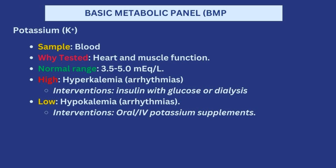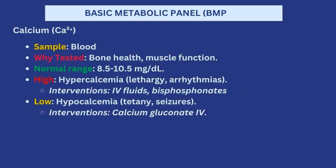Next, potassium helps to look at heart and muscle function. Normally it should be between 3.5 to 5. If it is high, that is hyperkalemia, and the patient could already be having arrhythmias. In that situation you may want to give insulin with glucose or have the patient go for dialysis. If it is low, the patient is suffering from hypokalemia and will also have arrhythmias. In that situation you may be thinking of replacing potassium — either by oral or intravenous potassium supplements.